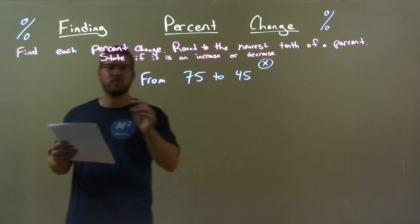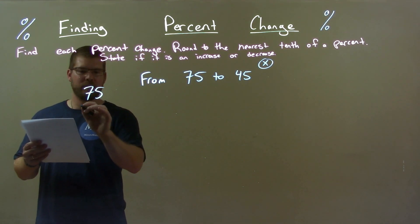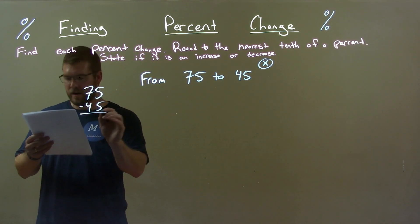Now, the way to do this, we subtract the larger number from the smaller number. 75 minus 45, find the difference there, and we get 30.